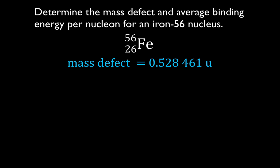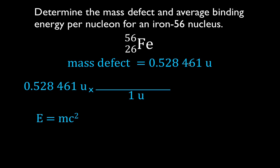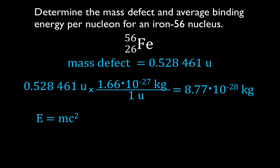We want to convert that mass defect into energy using Einstein's equation E=mc², but the mass must be in kilograms. So we convert 0.528461 AMU to kilograms using the conversion factor: 1 AMU = 1.66 × 10⁻²⁷ kg. Multiplying gives 8.77 × 10⁻²⁸ kg.